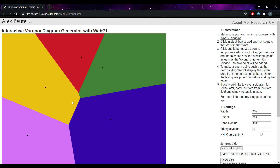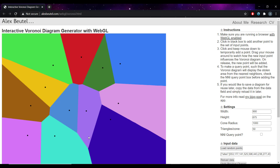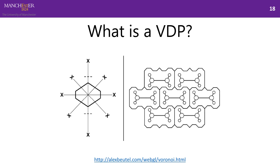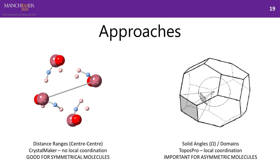Expanding this into three dimensions lets us look at crystal structures. Two methods can be used for net crystals: simple distance ranges running from centers of molecules or ions to each other — which can also be done in Crystal Maker and works well for symmetric molecules — or the Voronoi polyhedra approach which accounts for local coordination. The distance-based approach misses local coordination, but the VDP approach does not. This is especially important for asymmetric molecules, where center-to-center measurements might miss closer interactions.